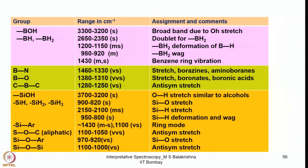I have given an elaborate table for different groups, the range in which absorption bands are seen, and the assignments and comments for those. For B–OH, the range is 3300 to 3200 cm⁻¹ — a sharp, strong, broad band due to O–H stretch. For B–H or B–H₂, it appears around 2650 to 2350 cm⁻¹ as a sharp doublet, with further bands at 1200 to 1150 (medium-strong), 980 to 920 (medium), and 1430 (medium-strong).